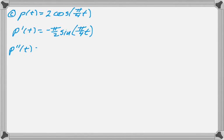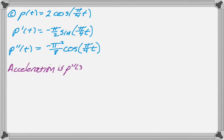So we're going to end up with a coefficient here of negative pi squared over 8, and then cosine of pi over 4t. And now I need to evaluate P double prime at 3. The acceleration is P double prime of 3.